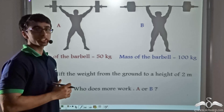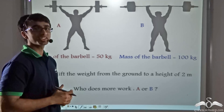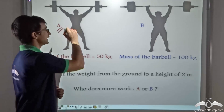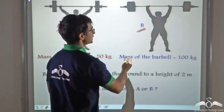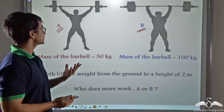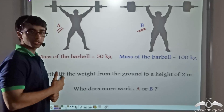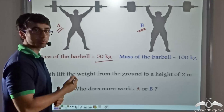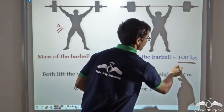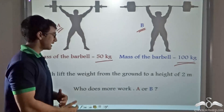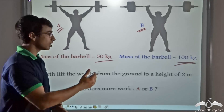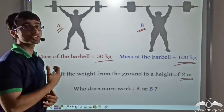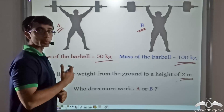An international weightlifting competition is going on at Venice Beach in California, where weightlifter A and weightlifter B are competing against one another. Weightlifter A is lifting a barbell of mass 50 kg and weightlifter B is lifting a barbell of mass 100 kg, and both of them are lifting their barbell from the ground to a height of 2 meters. We have to find out who is doing more work, weightlifter A or weightlifter B.